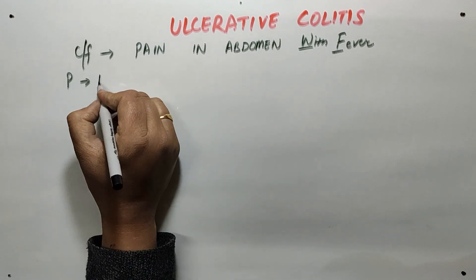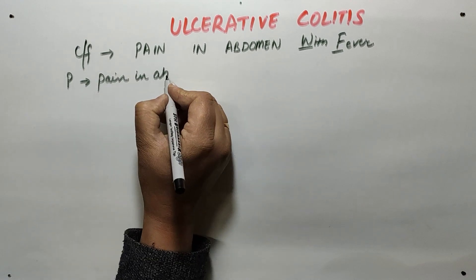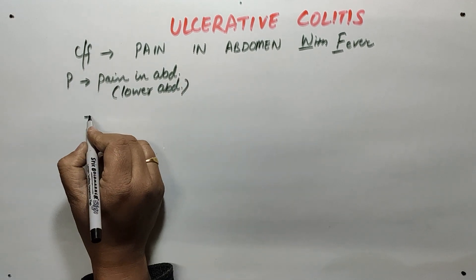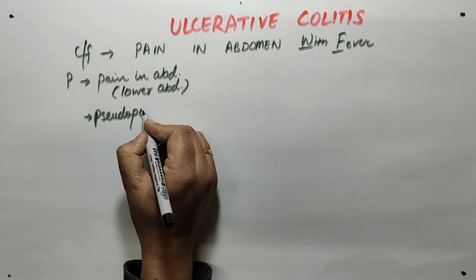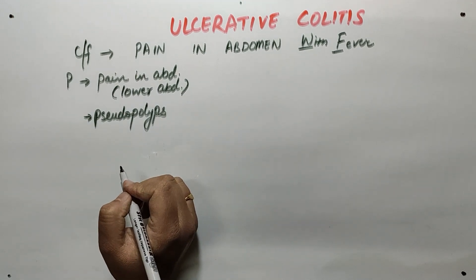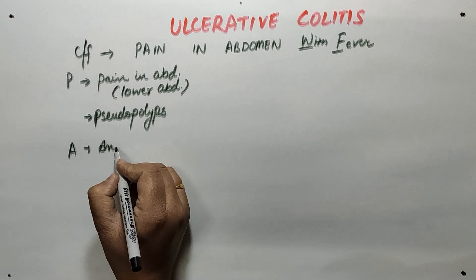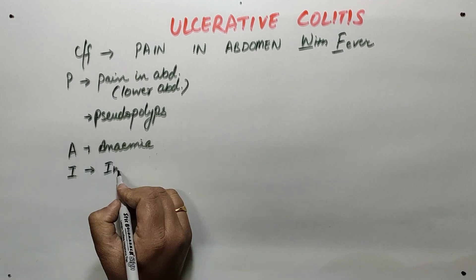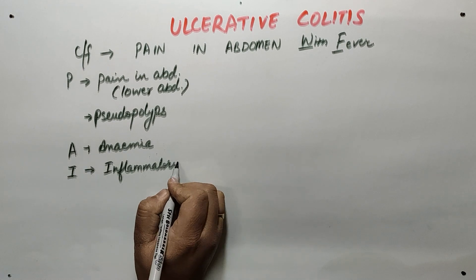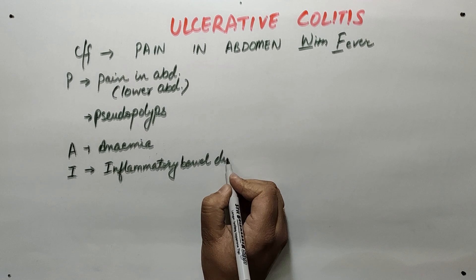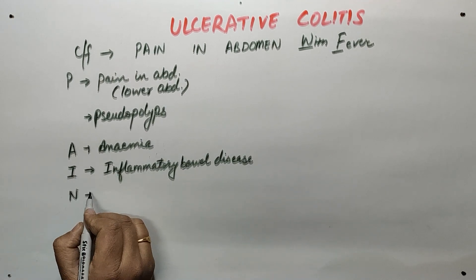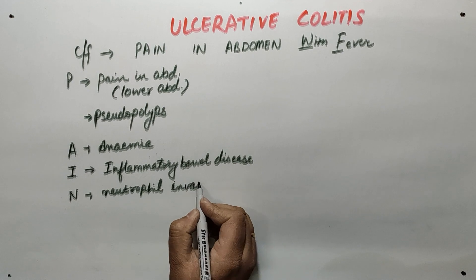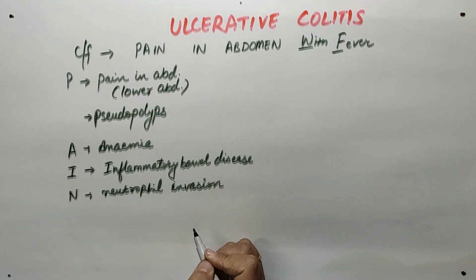P stands for pain in the abdomen, especially the lower abdomen. It also stands for pseudopolyps, which protrude into the lumen of the colon. A is for anemia. I means this is a type of inflammatory bowel disease. And N stands for neutrophil invasion in the crypts of the colon.